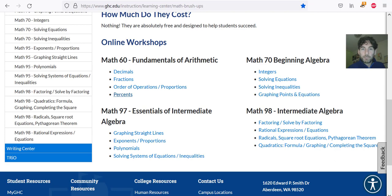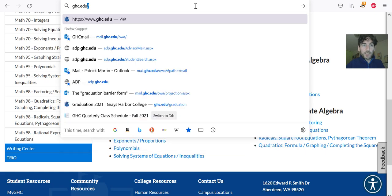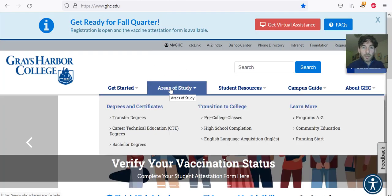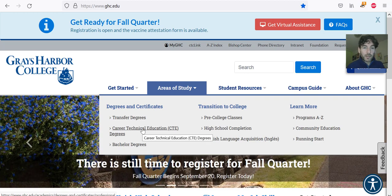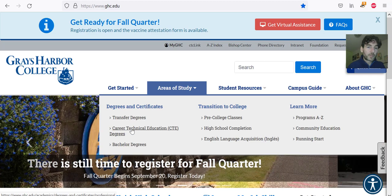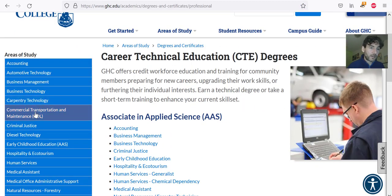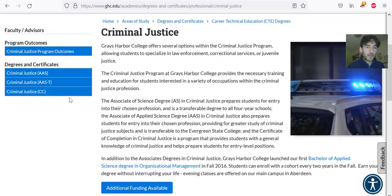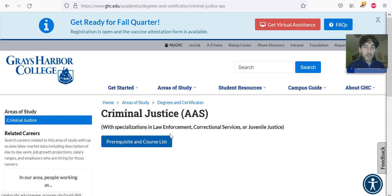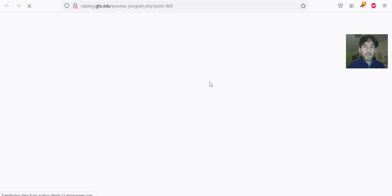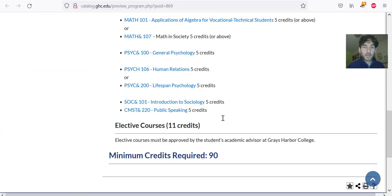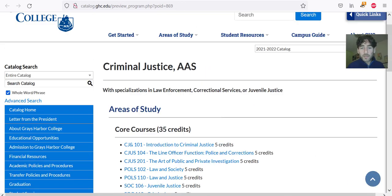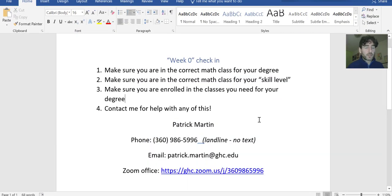Let's have a look at ghc.edu. If you look at areas of study from the home page, you'll find there are different degrees. For example, let's look at career technical degrees, let's look at criminal justice, let's look at Associate of Applied Science, and here are all of the prerequisites and the courses needed for that degree.